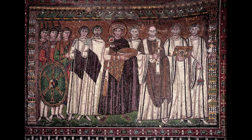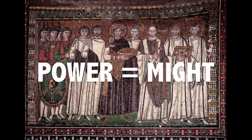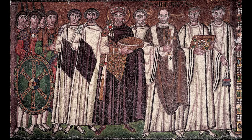Justinian conveys his power by showing us the army he has at his disposal. Usually power is shown as might, but because of this work's location within a church, he conveys through this mosaic the authority — the right — he has to rule the empire, which has been bestowed to him by Christ.